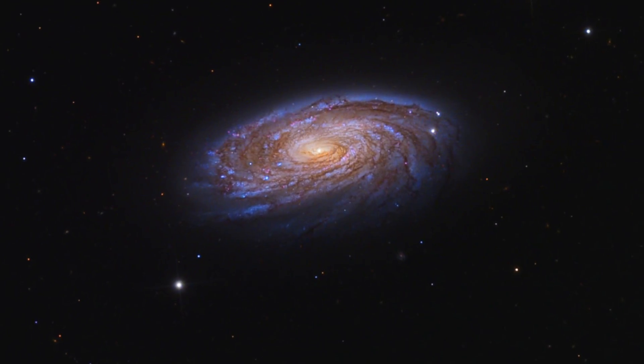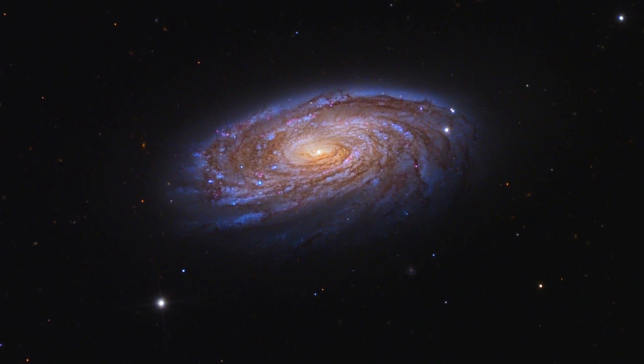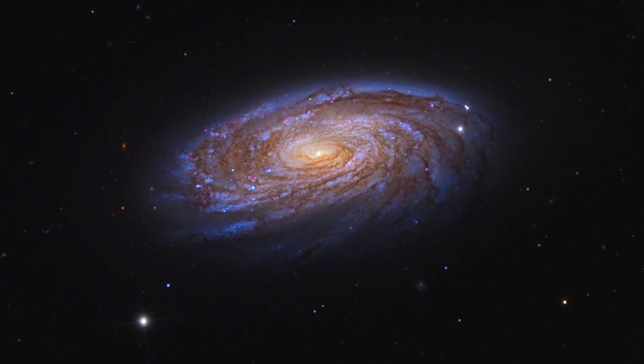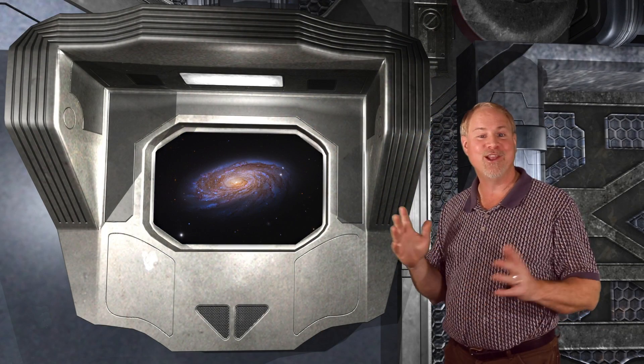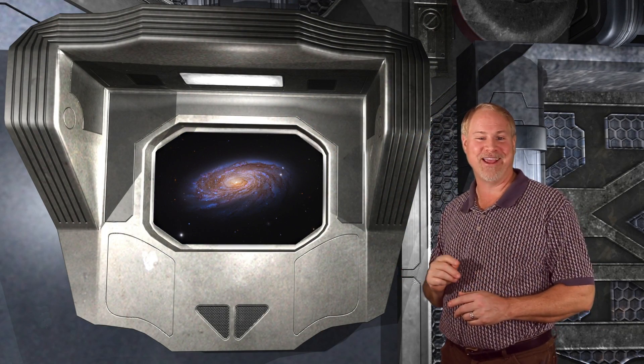M88 is one of the more rewarding galaxies in the Virgo cluster for smaller scopes. It's a very compact spiral, set at an angle of 36 degrees to our line of sight. It looks just like a miniature Andromeda galaxy.